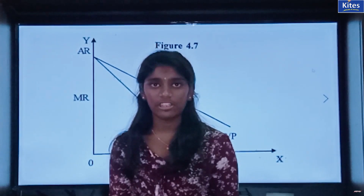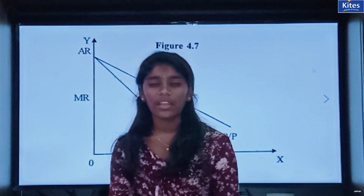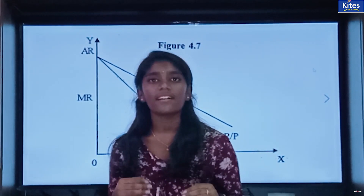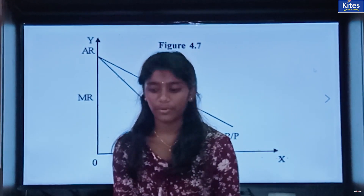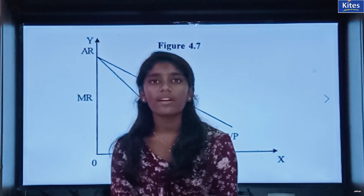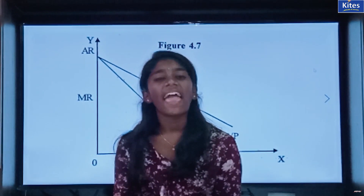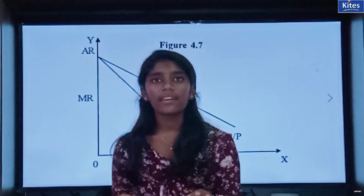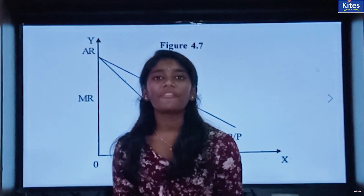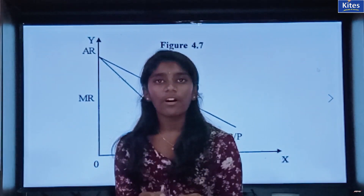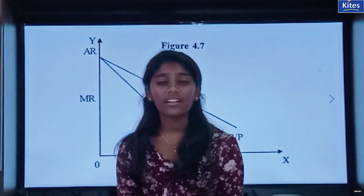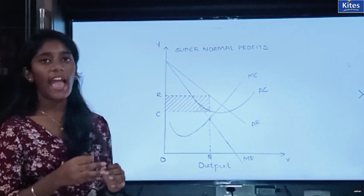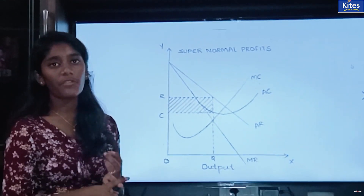In imperfect competition, both the industry and firm are the same. The conditions required to acquire equilibrium are the same as in perfect competition: first, the MC curve must equal the MR curve; and second, the MC curve must cut the MR curve from below. Here in imperfect competition also, the firm is in equilibrium when the MC curve equals the MR curve. In imperfect competition also, we have three cases: super normal profits, normal profits, and losses.